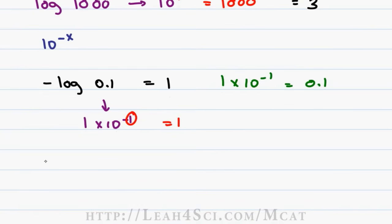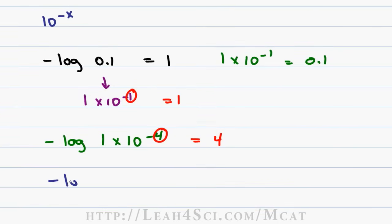Let's try this shortcut again. Say you're told negative log of 1 times 10 to the minus 4. We have 1 times 10 to a negative power. Circle that power and the answer is 4. What about negative log of 1 times 10 to the minus 11? Again, 10 to the negative number, circle that number and the answer is 11.